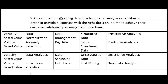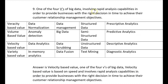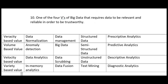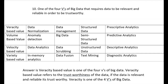Number nine: one of the four V's of big data involving rapid analysis capabilities in order to provide businesses with the right decision in time to achieve their customer relationship management objectives. The key word is rapid analysis capabilities — we're talking about speed, so it must be velocity-based value. Number ten: one of the four V's that requires data to be relevant and reliable in order to be trustworthy — that's veracity-based value. Veracity-based value refers to the trustworthiness of the data.